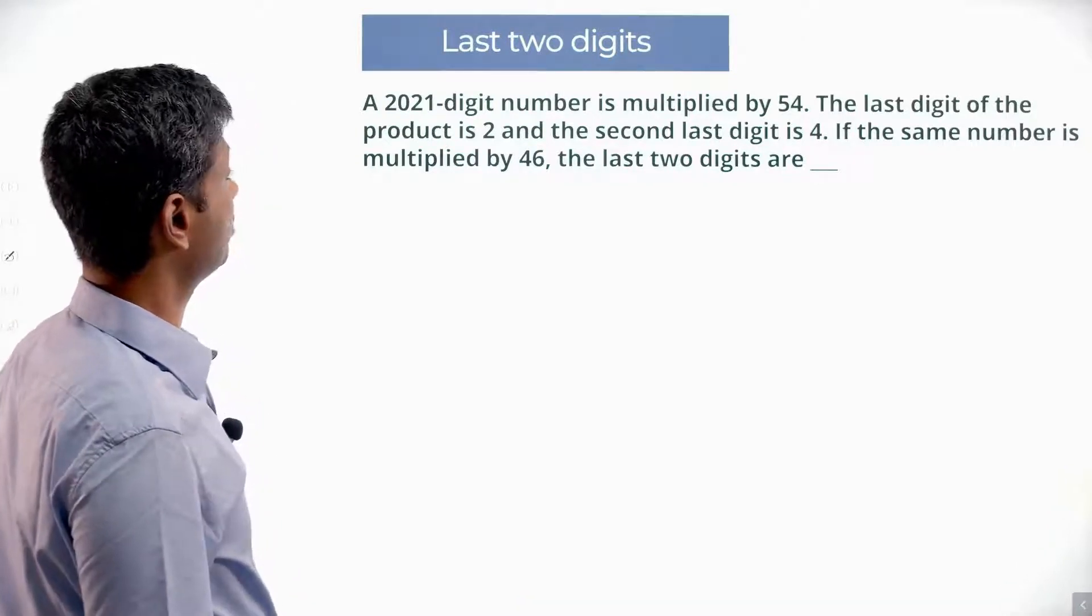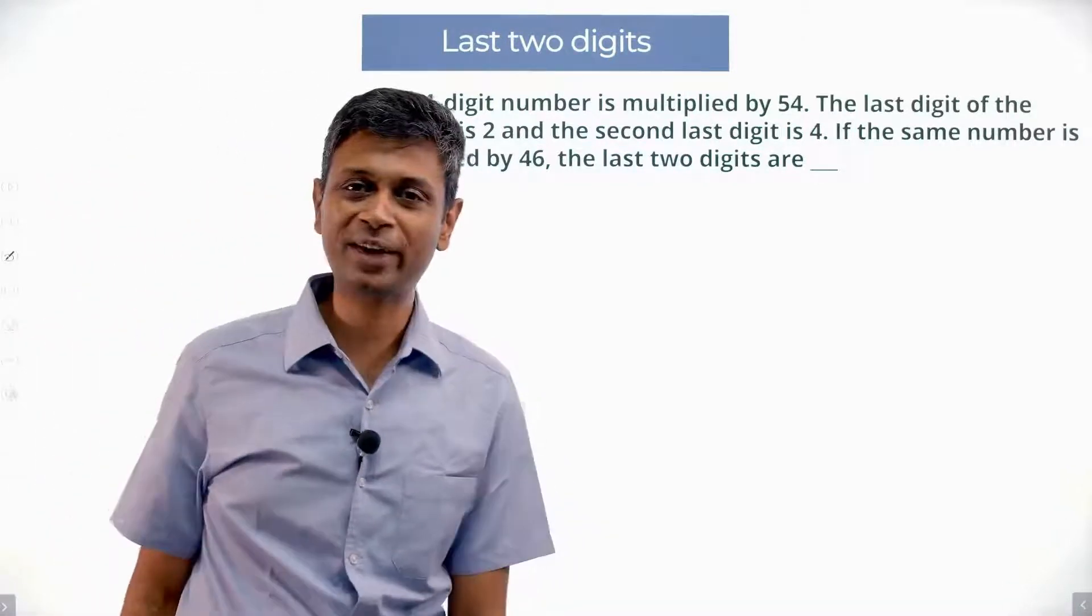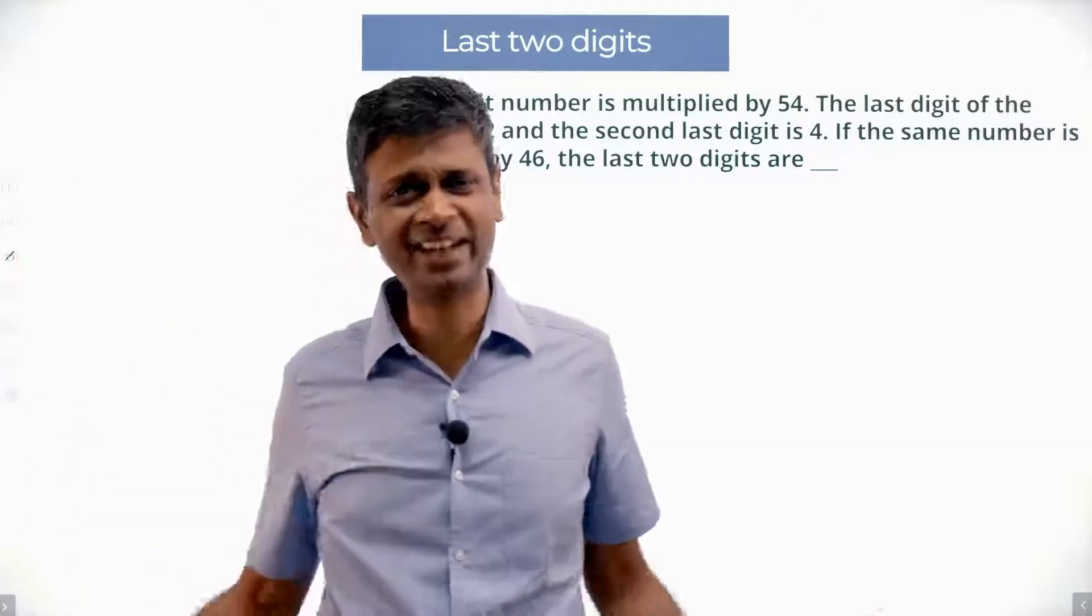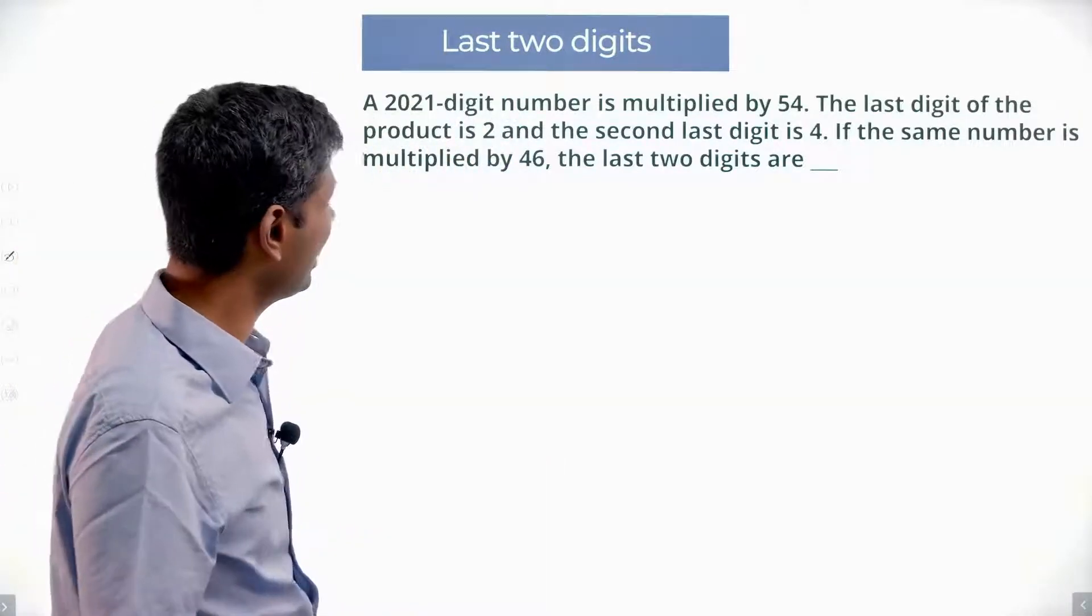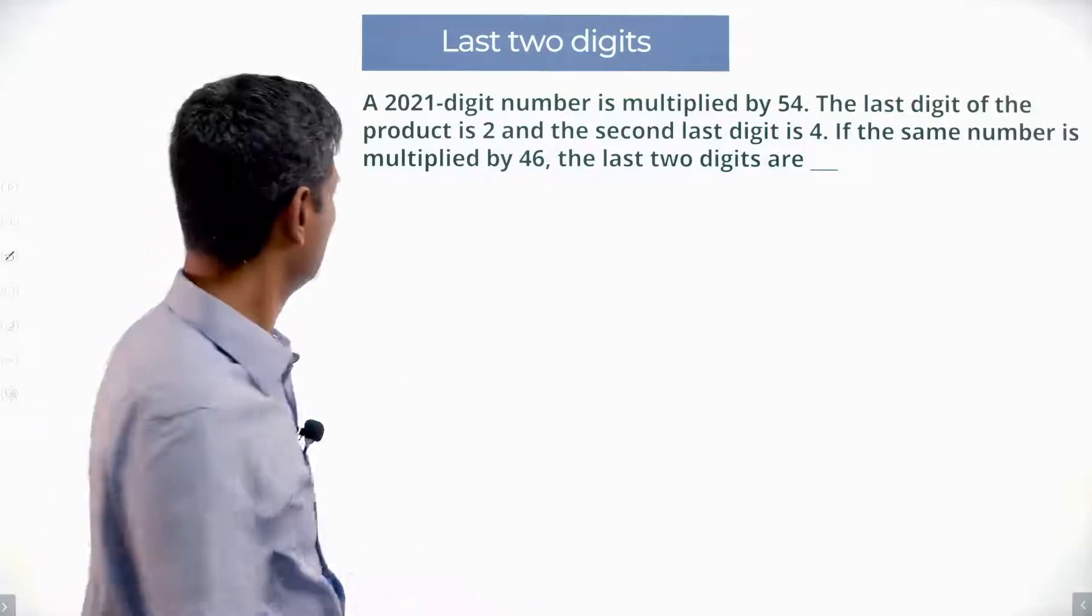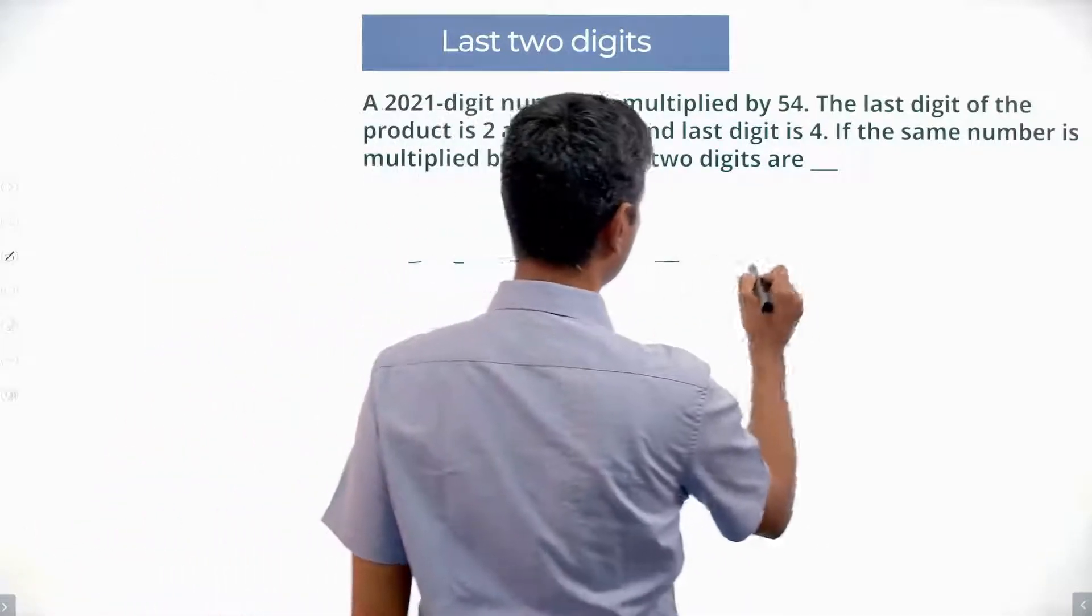A 2021-digit number is multiplied by 54. Straight away I know I cannot do this question algebraically. I cannot write down a 2021-digit number. The last digit is 2 and the second last digit is 4. I have a 2021-digit number.